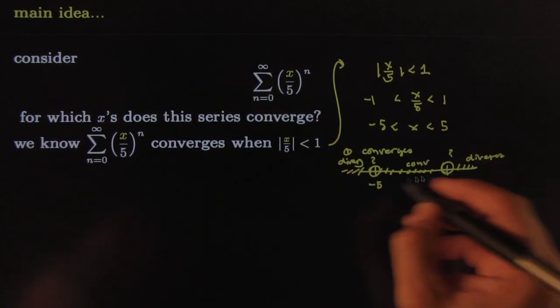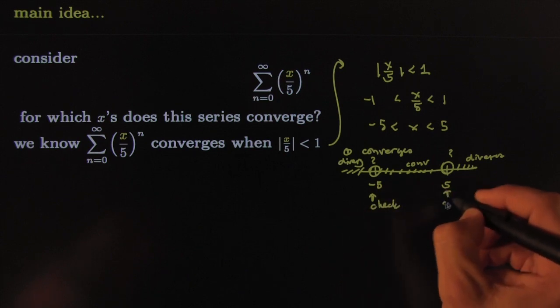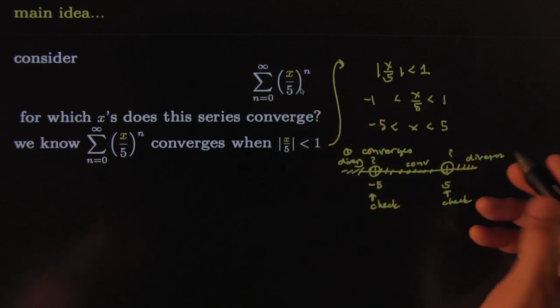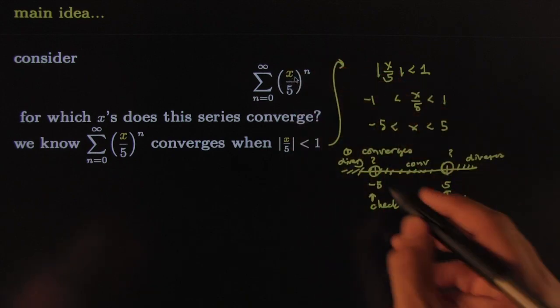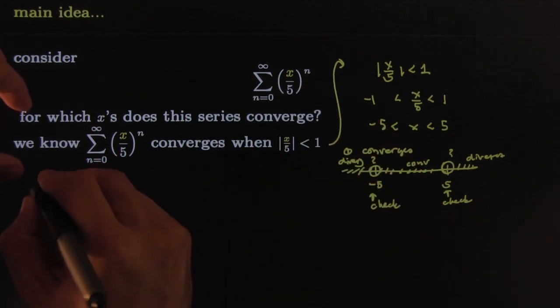We need to check separately because this test wouldn't help you when your value is really close to one. So for that, we actually do it manually. Here we test, for example, x equals negative five. So plug in x equals negative five.